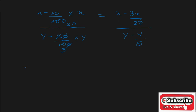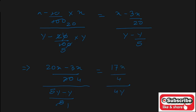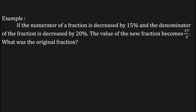This simplifies to 20x minus 3x upon 20, divided by 5y minus y upon 5, which equals 17x upon 20, divided by 4y upon 5. Simplifying further, 17x upon 4 divided by 4y gives us 17x upon 16y.